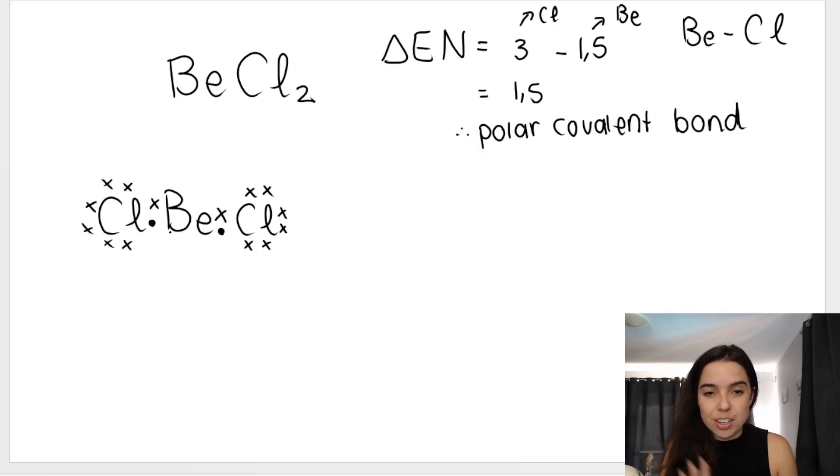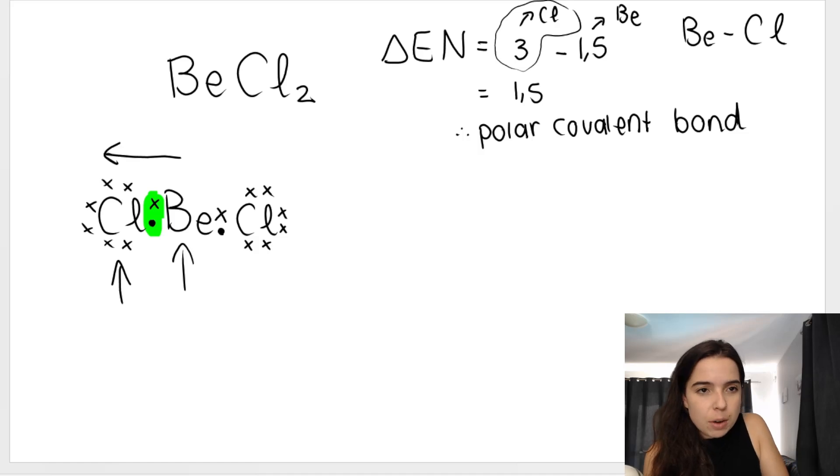If you look at my Lewis dot diagram, what I want you to notice is that here I showed you that chlorine has a higher electronegativity. And a nice way to think of this is if for this bond, this BeCl bond over here, we can draw an arrow pointing towards the atom that is more electronegative. So between this Be and this Cl, which one is more electronegative? Which one has a higher electronegativity? Cl. So we draw an arrow that points that way.